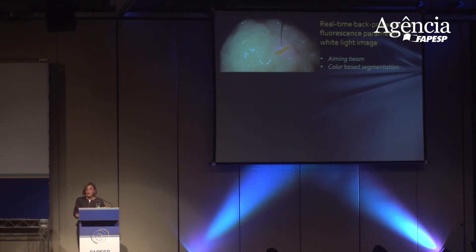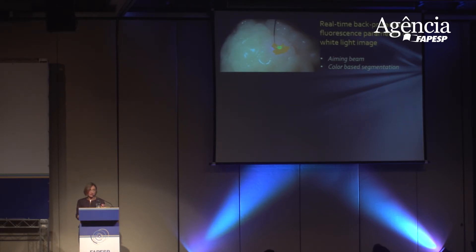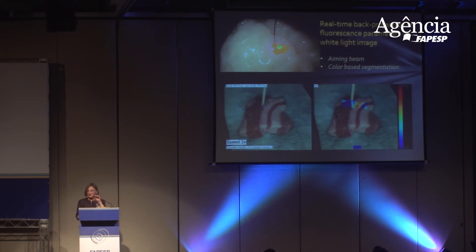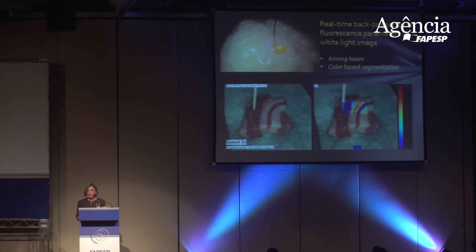Now we have a way, using an aiming beam and color segmentation method — an algorithm we developed — to not only locate the tumor but to trace where it is located by painting the fluorescence lifetimes on top of a white light image. This is a more realistic sample: a steak this time. You can see that steak can also be used for quality control of meat. You can paint these biochemical features on top of the tissue sample on the white light image, and this is done in real-time — this display is just twice the speed of real-time.